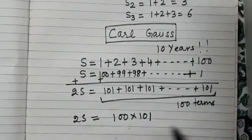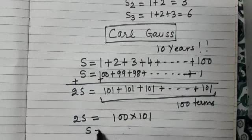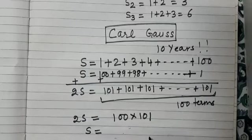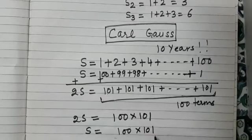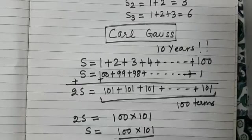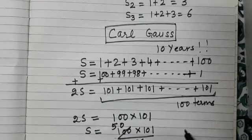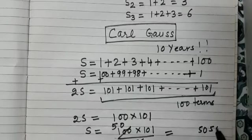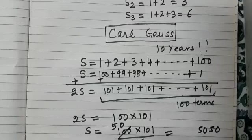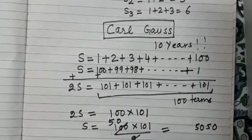So 2S is equal to 100 into 101. So what will be S? That is the required sum of first 100 natural numbers will be 100 into 101 divided by 2. You can simplify this.